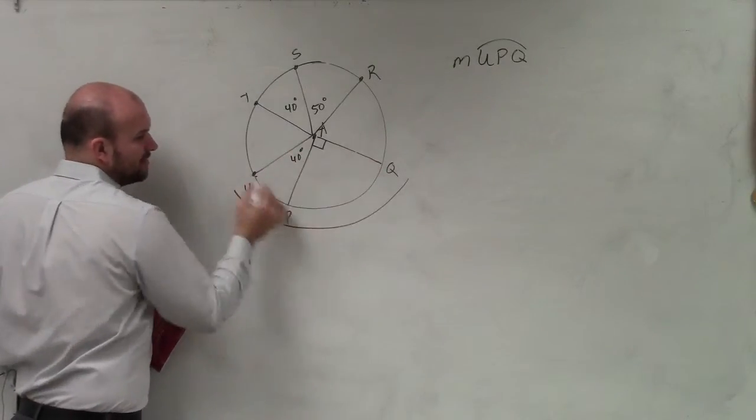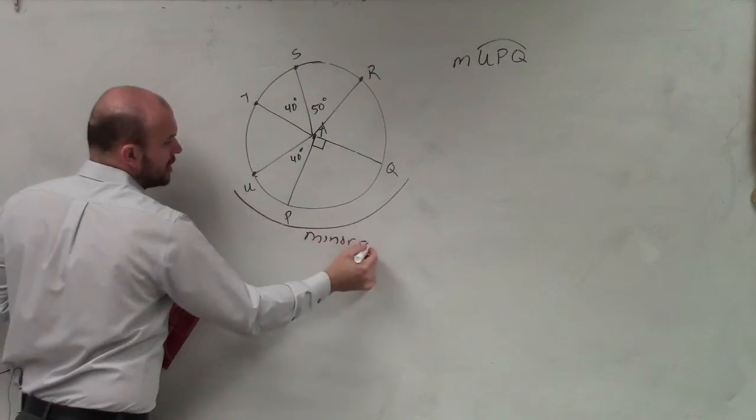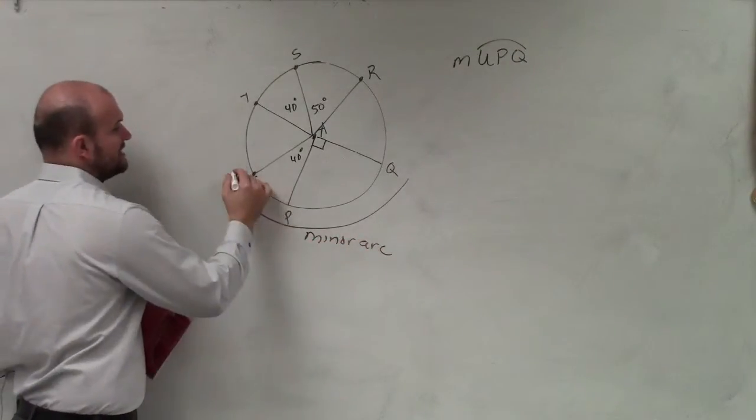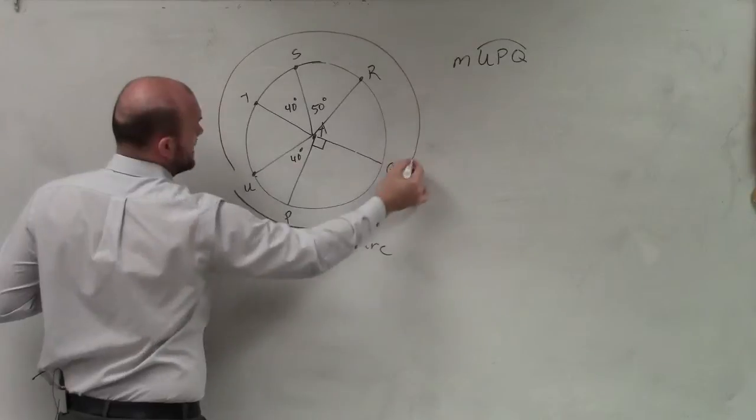So this angle, this measurement, is what we call a minor arc. This is what we call the major arc.